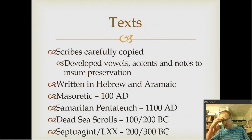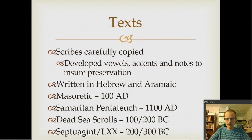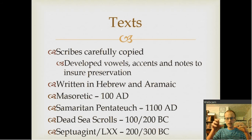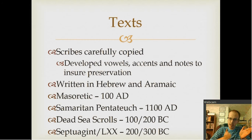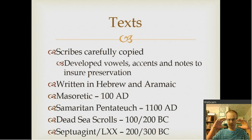Now, I believe it was Bart Ehrman who said that our New Testament manuscripts have so many errors that it's just terrible. But the thing is, we have so many errors because we have so many copies — and not all the copies have the error in the same place. We only believe that the original manuscript was what was inspired by God. The copies are obviously going to have some mistakes because people make mistakes. If you sit a hundred people in a room and have them all copy something, the copies will be a little different. These scribes developed vowels, accents, and notes to ensure preservation — before that, Hebrew worked a lot differently.